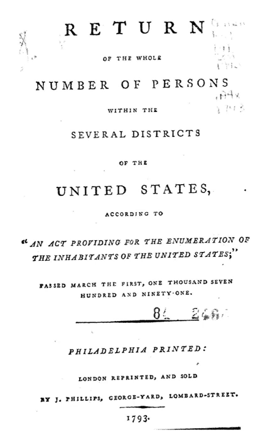OMB developed race and ethnic standards in order to provide consistent data on race and ethnicity throughout the federal government. The development of the data standards stemmed in large measure from new responsibilities to enforce civil rights laws. Among the changes, OMB issued the instruction to 'mark one or more races,' after noting evidence of increasing numbers of interracial children and wanting to capture diversity, having received requests from people who wanted to acknowledge their or their children's full ancestry. Prior to this decision, the census asked people to report only one race.